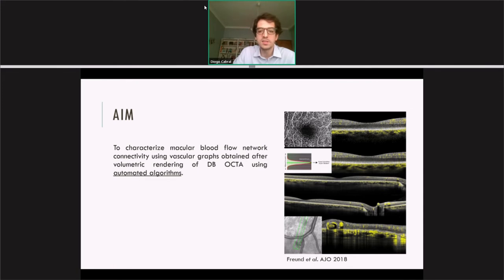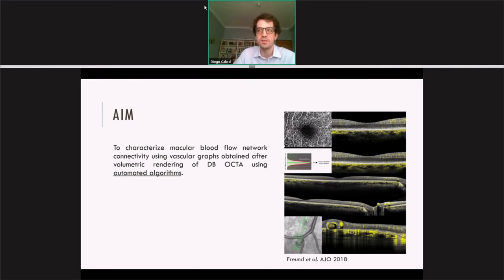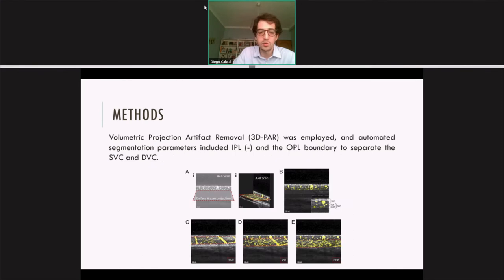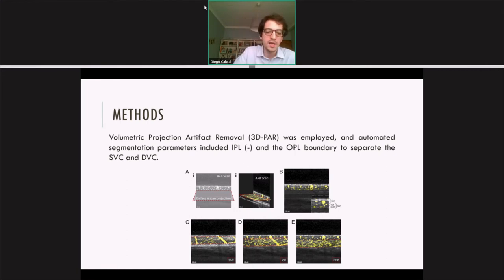We used the novel dense B-scan OCT angiography from Heidelberg, which has a higher resolution than conventional OCT, and we used an automatic algorithm to evaluate the connections between the superficial arteries and the superficial veins. We performed B-scan OCT angiography acquisitions of the perifovea of seven healthy subjects from Dr. Freund's laboratory at New York. Afterwards, we employed volumetric projection artifact removal from Heidelberg and rendered together, using three-dimensional software, both the structural OCT and OCT angiography.